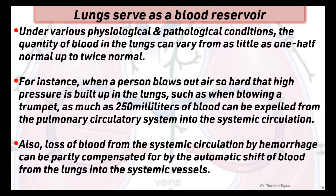Under various physiological and pathological conditions, the quantity of blood in the lung can vary from as little as one half of normal up to twice normal. For instance, when a person blows out air so hard that high pressure is built up in the lungs, such as when blowing a trumpet, as much as 250 milliliters of blood can be expelled from the pulmonary circulatory system into systemic circulation. Also, loss of blood from systemic circulation by hemorrhage can be partly compensated for by the automatic shift of blood from lungs into systemic vessels.